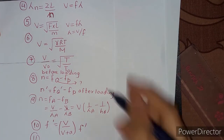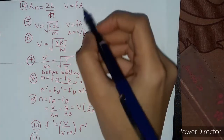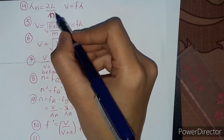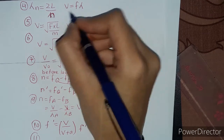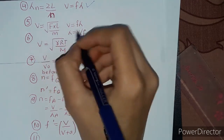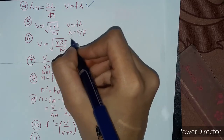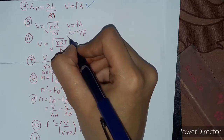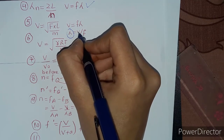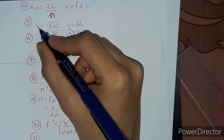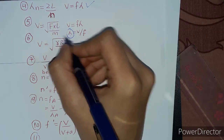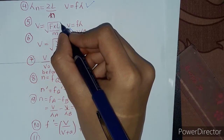The first formula is: lambda_n is equal to 2L divided by n, and v is equal to f cross lambda. In the fifth numerical, we have to find the value of lambda. First we find the value of v, which is equal to under root of F times L divided by m.